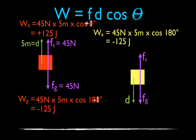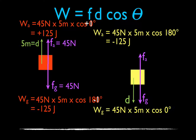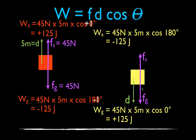How much work does the gravitational force do when lowering? The gravitational force is acting in the same direction as the displacement, so the angle between them is zero, and the cosine of zero is plus 1. That means gravity does plus 225 joules of work. So when you raise something up, you do positive work and gravity does negative work. When you lower it, you do negative work and gravity does positive work — you're taking energy out of the system.